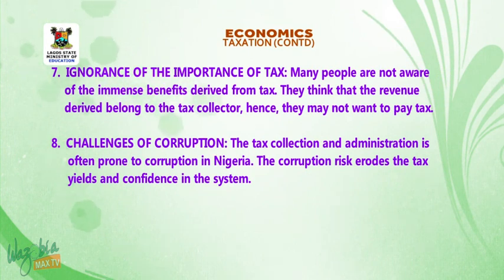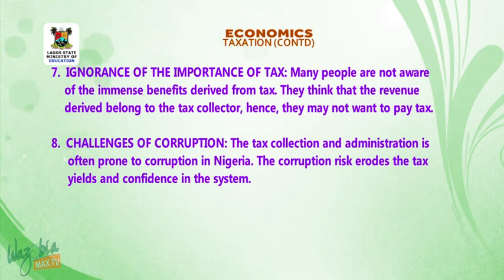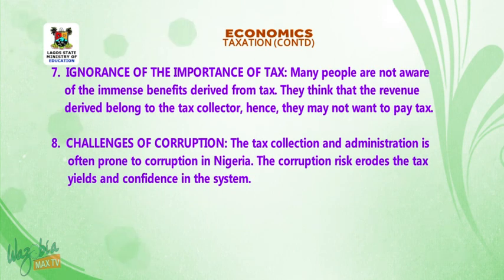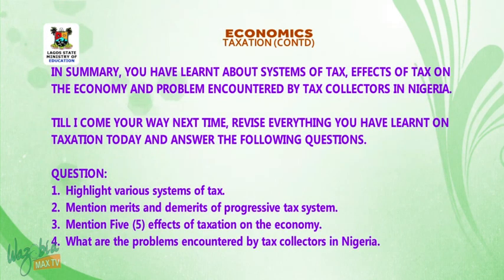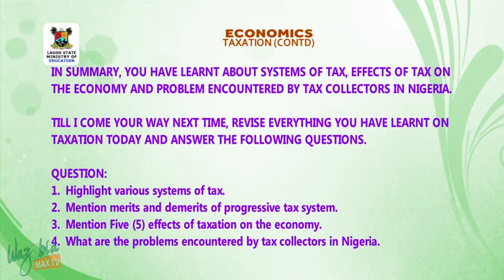Number 7: ignorance on the importance of tax — many people are not aware of the immense benefits derived from tax. They think that the revenue derived belongs to the tax collector; hence, they may not want to pay tax. Number 8: challenges of corruption — tax collection and administration is often prone to corruption in Nigeria. The corruption risk erodes tax use and confidence in the system. In summary, you have learnt about systems of tax, effects of tax on the economy, and problems encountered by tax collectors in Nigeria. Revise everything you have learnt on taxation today and answer the following questions.